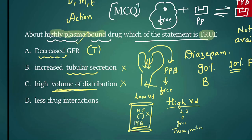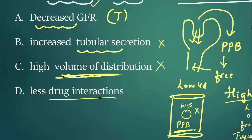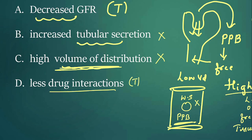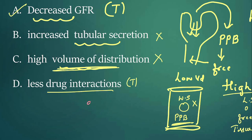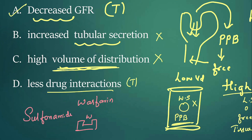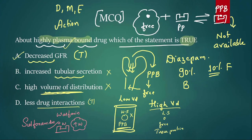Regarding drug interactions: there will be drug interactions with highly plasma protein-bound drugs. For example, warfarin is highly plasma protein-bound. If you add sulfonamides, they can displace warfarin from plasma proteins, increasing free warfarin levels, causing toxicity and bleeding. So drug interactions do occur. However, between option A (decreased GFR) and the drug interaction option, option A is the best answer in an exam context. The answer is A, decreased GFR.